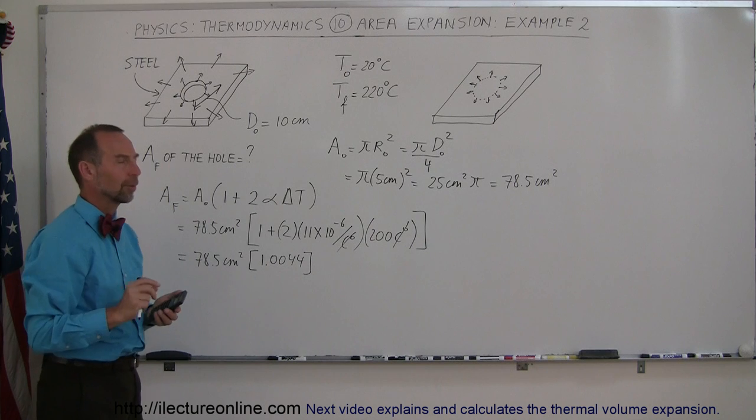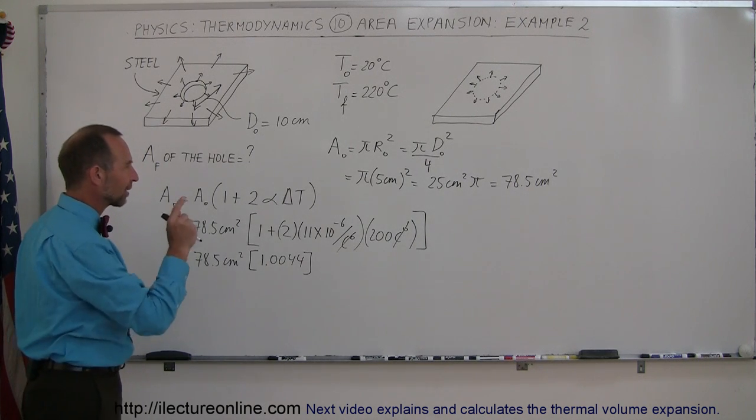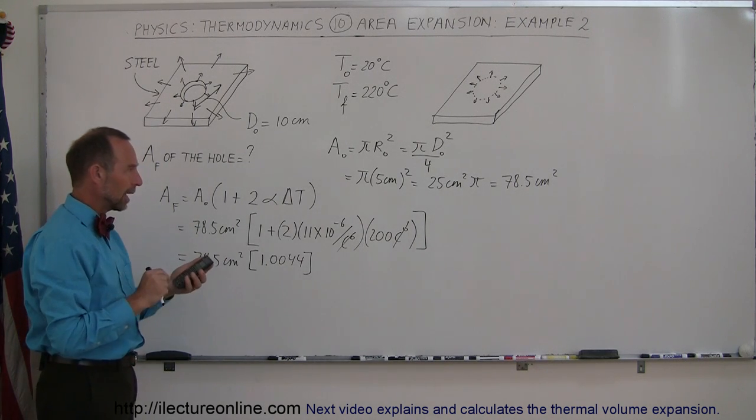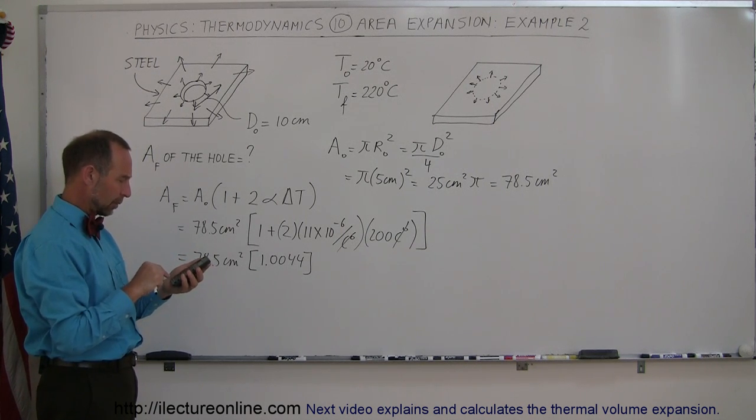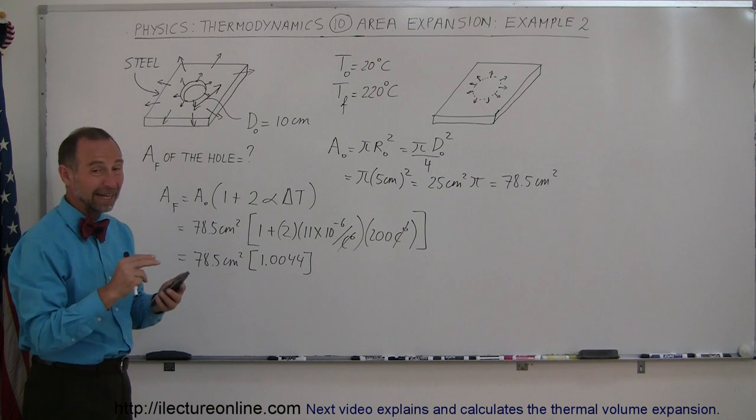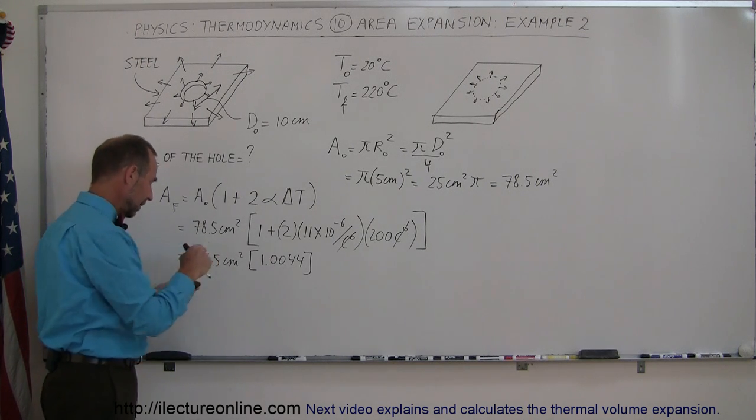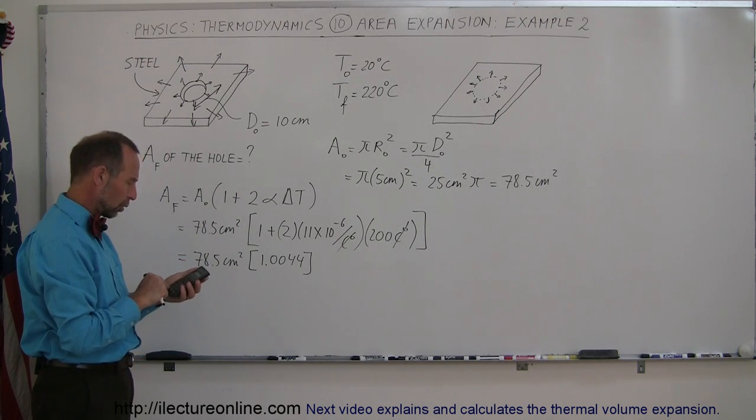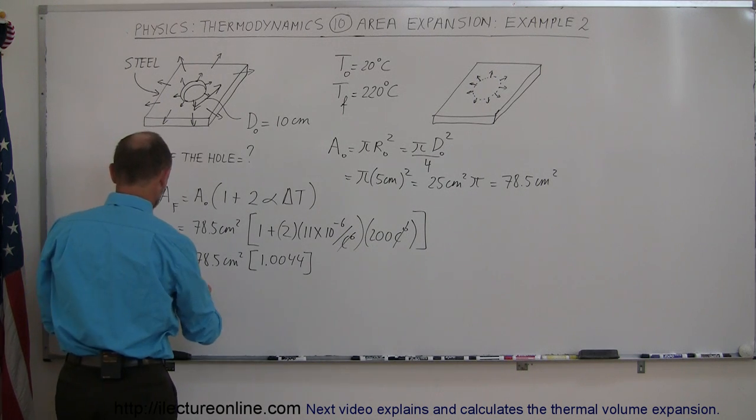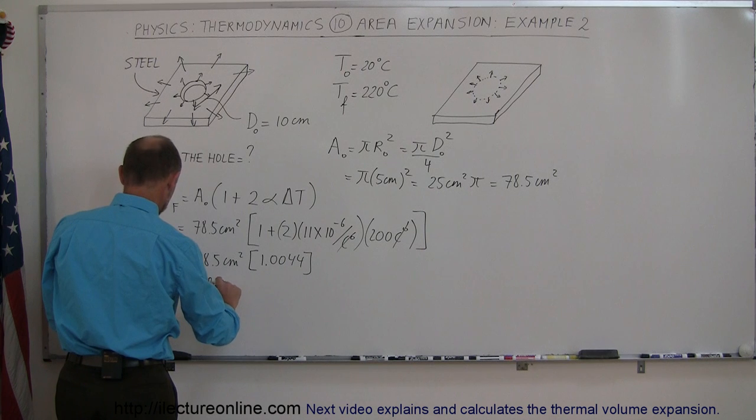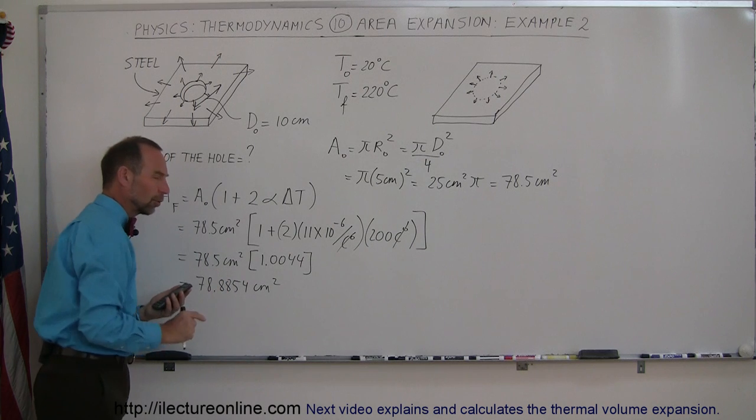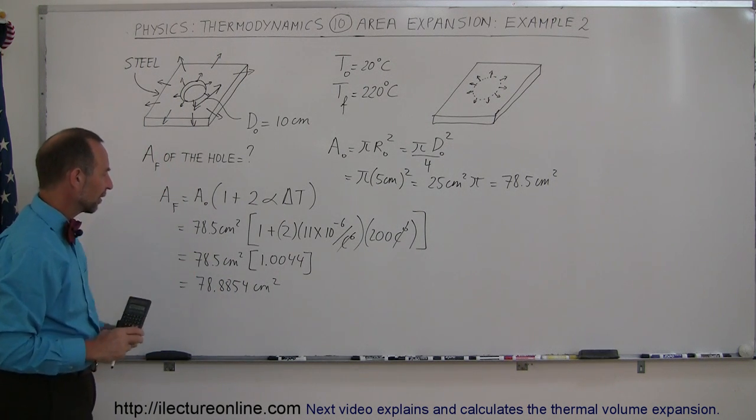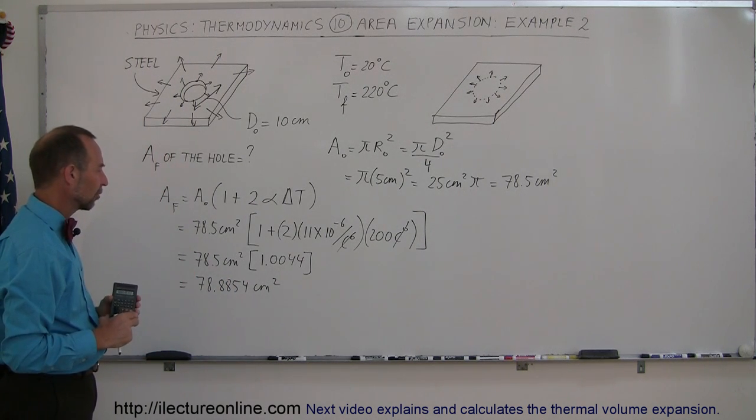Actually, I'm going to go back and get an exact number for that. So we have 25 times pi equals 78.5398. I want to keep the exact numbers, times 1.0044 equals, and so that's exactly equal to 78.8854 centimeters squared. Now, I didn't write this to more exact numbers, but we'll worry about that in just a moment.